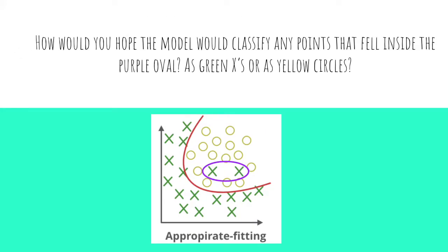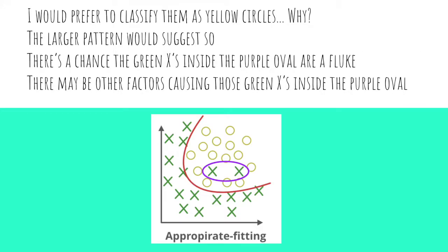Ideally, how would you hope the model classifies points that fall within the purple oval — as green X's or yellow circles? I would hope the model classifies them as yellow circles, even though it would misclassify the two known points. Green X's in that location don't fall in line with the greater trend and could be a fluke. If you saw two more data points with the exact same values, they may actually correspond to yellow circles, likely caused by some other factor not yet accounted for.